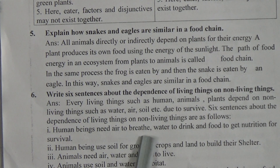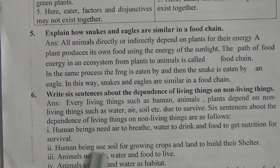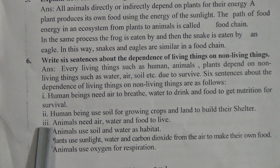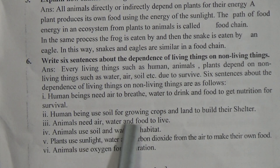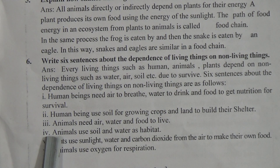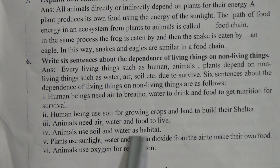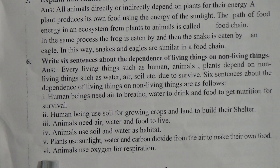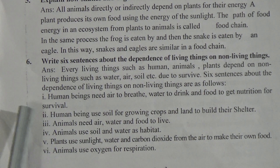Number two: Human beings use soil for growing crops and land to build their shelter. Number three: Animals need air, water, and food to live. Number four: Animals use soil and water as habitat. Number five: Plants use sunlight, water, and carbon dioxide from the air to make their own food. Number six: Animals use oxygen for respiration.